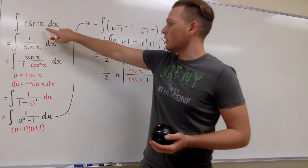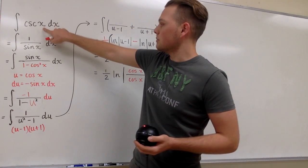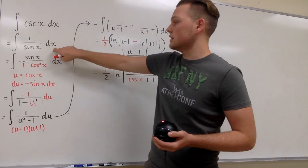So first off, we're going to go ahead and jump right in and reciprocate cosecant x and we're going to get 1 over sine x dx.